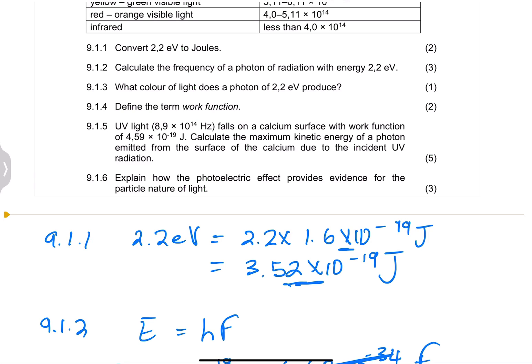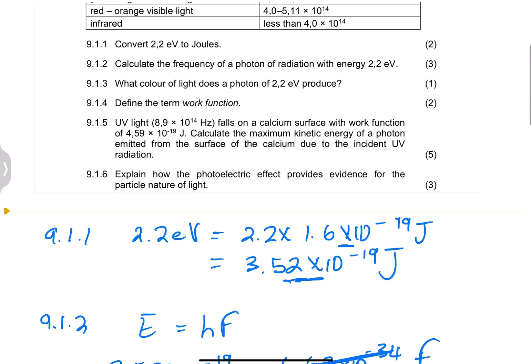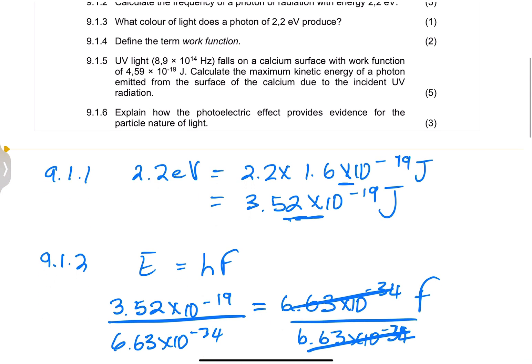Next question, they say define the term work function. I'm not going to write this one down. We know that this is the minimum energy required to emit electrons from a metal surface. Now, the next question, 9.1.5.